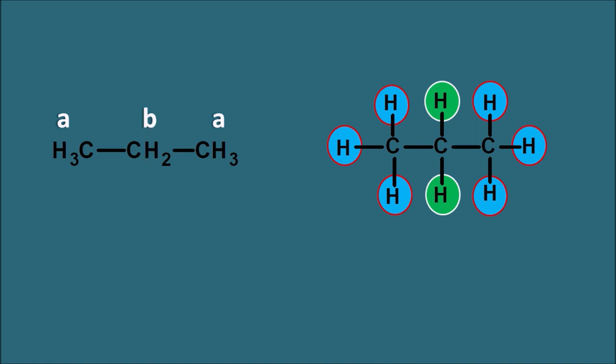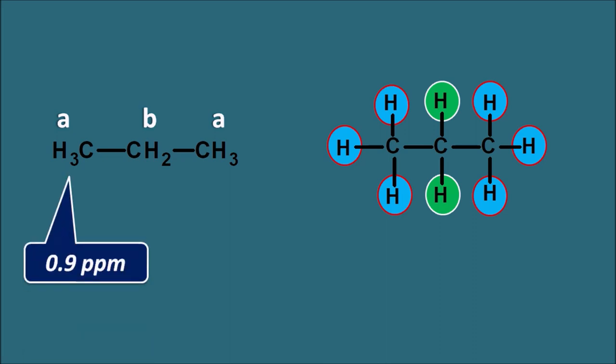All six methyl protons are equivalent, so they give one NMR signal, indicated by letter A. Looking at the chemical shift values for propane, methyl protons have an approximate chemical shift of 0.9 ppm, whereas methylene protons appear at 1.3 ppm. In this way, peaks corresponding to different types of protons can be identified by their approximate chemical shift values.